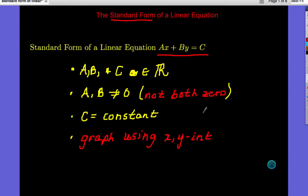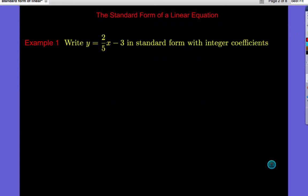And what we're going to do is write equations in Standard Form and convert some equations to Standard Form. In our first example, we're going to take a slope-intercept form. We're going to write Y equals two-fifths X minus three in Standard Form with integer coefficients, so we don't want this fraction.